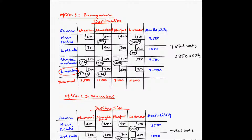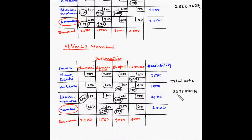Comparing the total costs for these two options, Option 2 gives a lower transportation cost. This means that Mumbai is the preferred location for the fourth source of raw material supply.